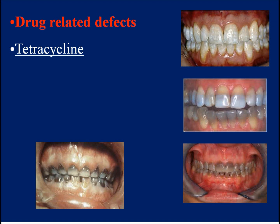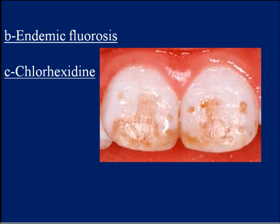Treatment may be bleaching extracoronal or intracoronal after intentional root canal therapy. B. Endemic fluorosis: intake of excess fluoride during tooth formation may produce defects in the enamel matrix, causing hypoplasia. It is seen as white spots ranging from chalky white to brown discoloration. Treatment is done by extracoronal bleaching with restorative therapy of the porous surface. C. Chlorhexidine: this is a surface stain from incorrect use of chlorhexidine mouthwash, ranging from yellow to brown color.